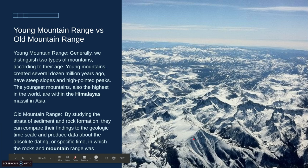Young mountain range versus old mountain range. We generally distinguish two types of mountains according to their age. Young mountain ranges were created several dozens of millions of years ago and they have steep slopes and high pointed peaks. The youngest mountain ranges are the highest in the world, like the Himalayas massif in Asia.